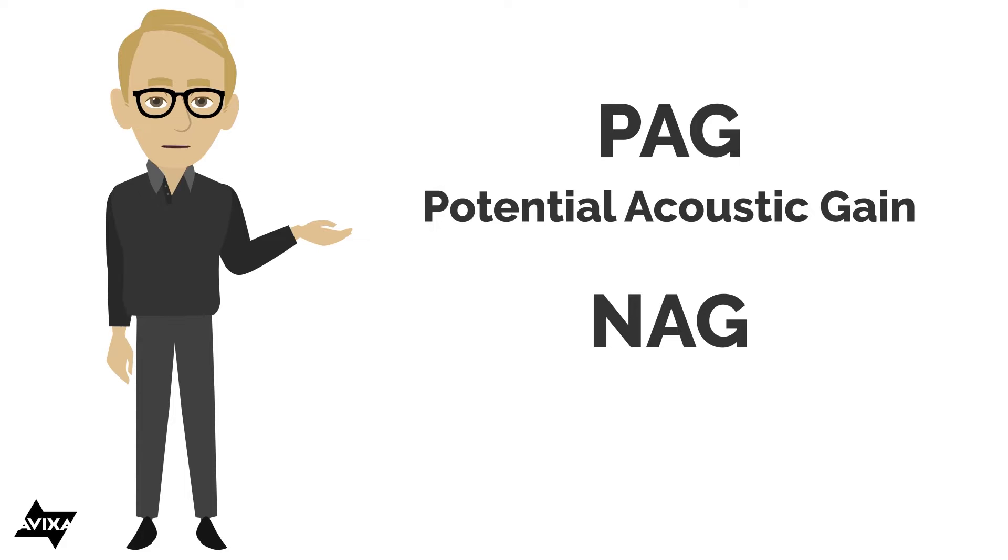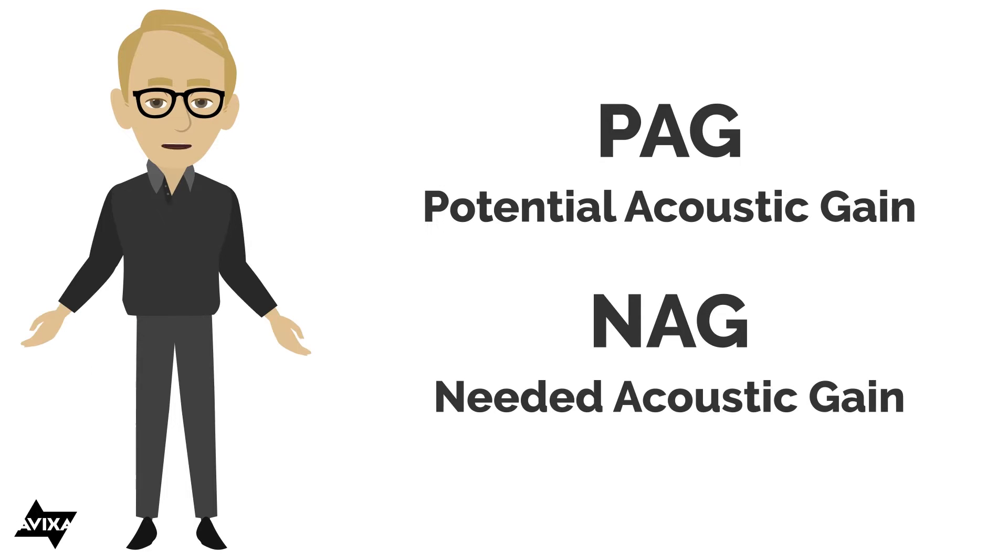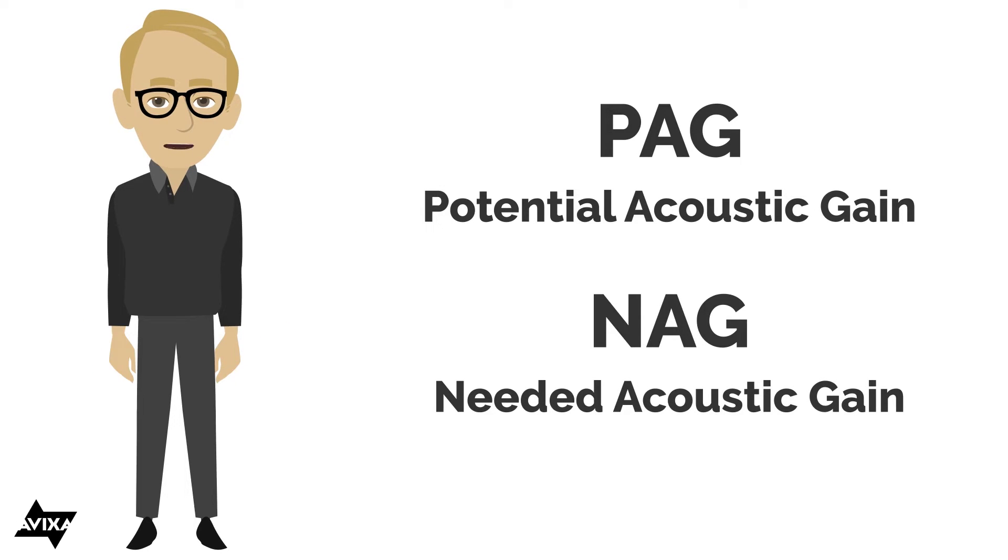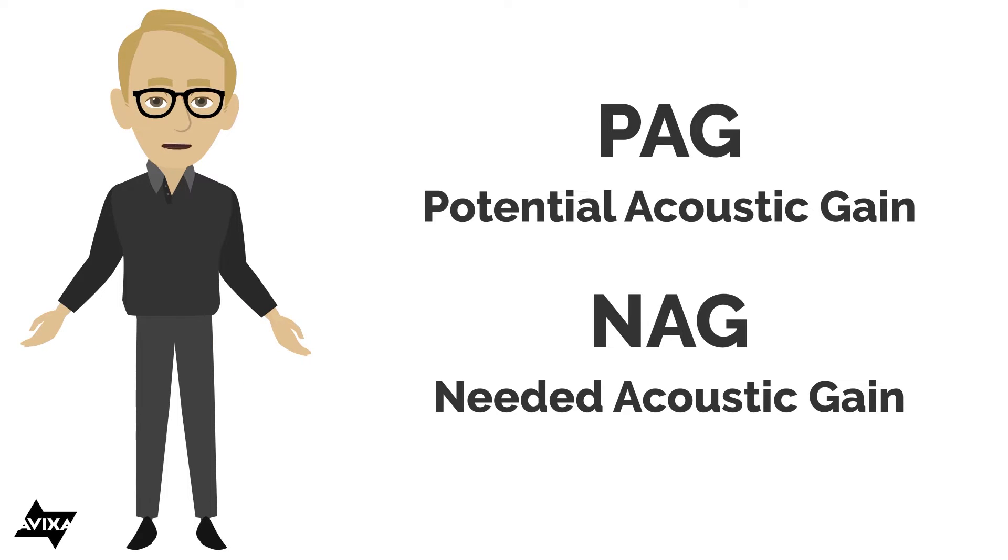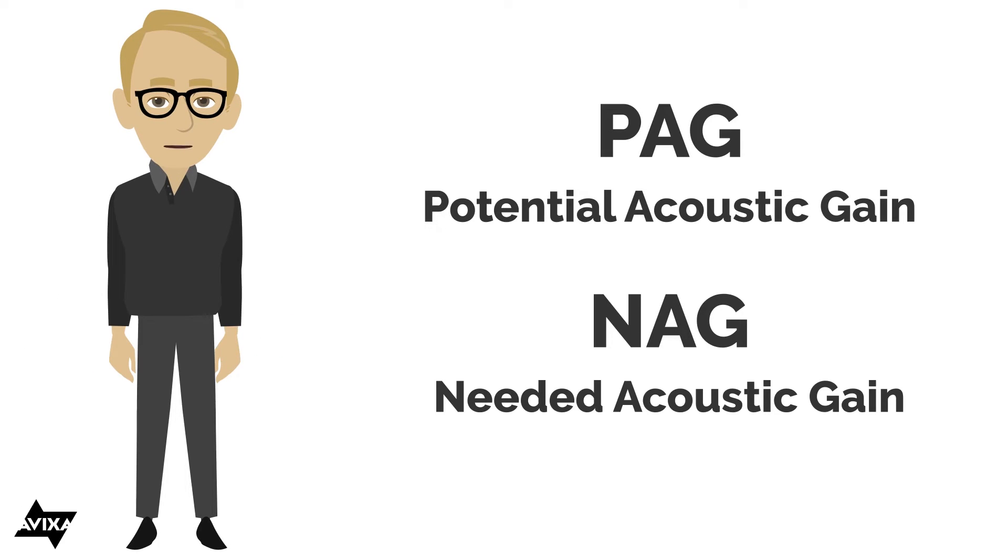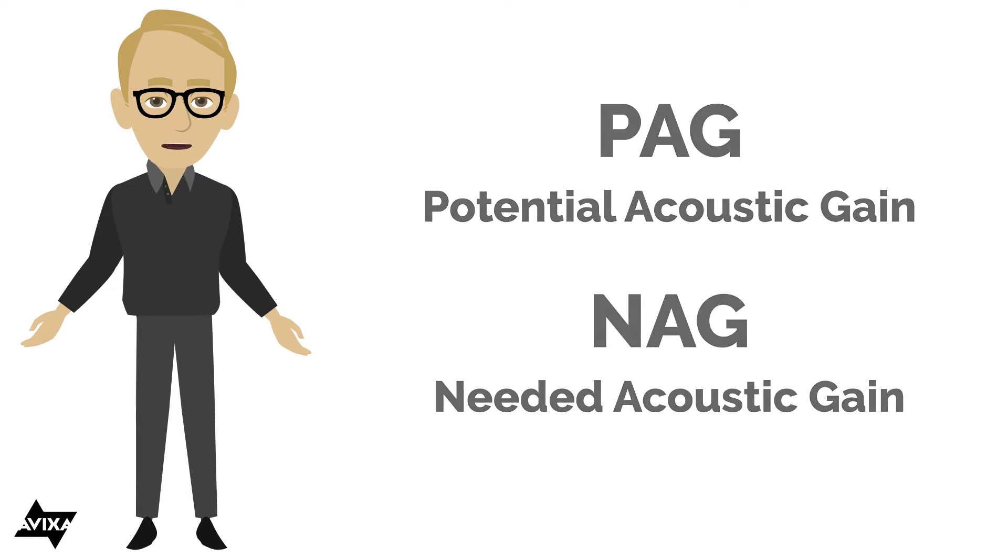And we are going to compare that against the NAG, the Needed Acoustic Gain. This is what I need from my system. Now, it would seem obvious the potential of my system needs to be greater than or equal to the need, or what I need out of my system, so that the system is going to be stable.